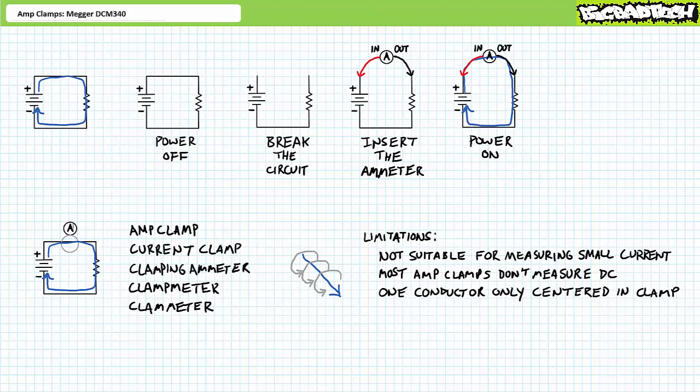Secondly, only one current carrying conductor can be inside the clamping mechanism at a time. The inclusion of two or more current carrying conductors inside the clamping mechanism at the same time may result in an erroneous reading because the magnetic fields coalesce and can negate each other's effects, such that the amp clamp falsely reads no current, even though each wire could equally be carrying thousands of amps in opposite directions.